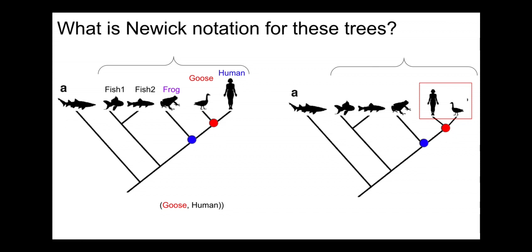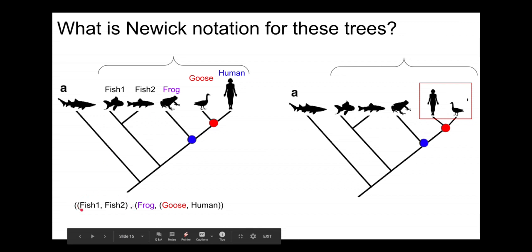So we can start with goose and human. We add frog on the left; goose and human are surrounded by parentheses into a clade. Frogs go next to them, surrounded by parentheses because the three fit into a clade. Then fish one and fish two, they are their own separate clade, they have a common ancestor there, so they have parentheses surrounding them. And then everybody gets wrapped in a clade.